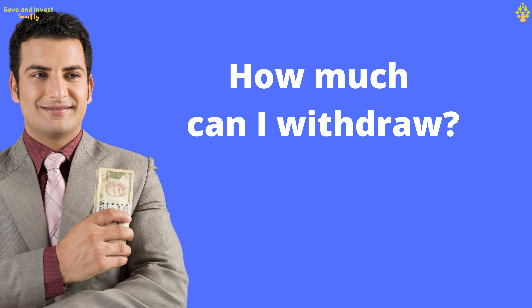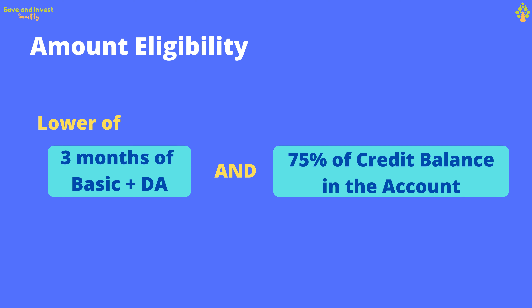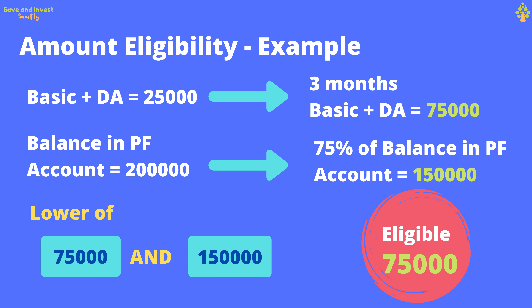How much can I withdraw from PF for COVID-19 relief? The maximum that you can withdraw is the lower of 3 months of basic plus DA or 75% of credit balance in the account. For example, if basic plus DA is 25,000 per month, then 3 months basic plus DA is 75,000. If you have a credit balance of 2 lakhs in your PF account, the lower of these two is 75,000, so you can withdraw a maximum of Rs 75,000 only.